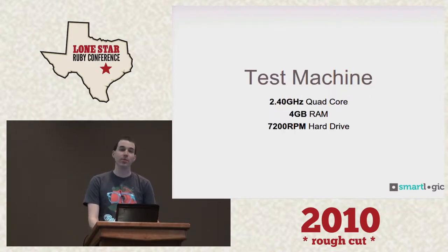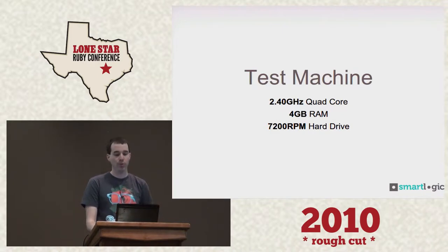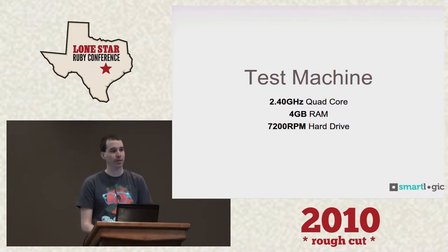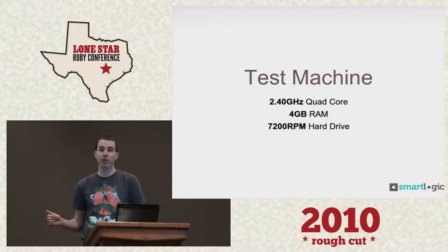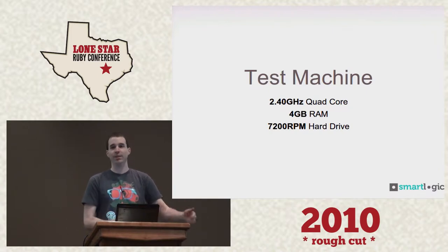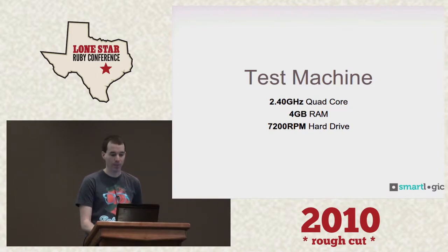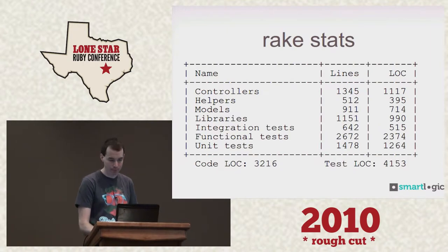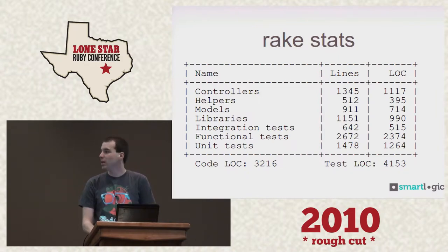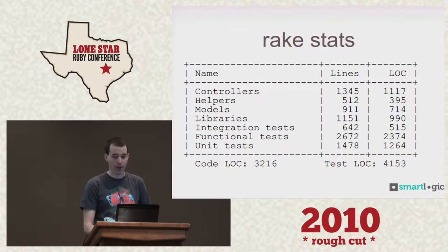I'm going to be showing a lot of benchmarks, so here's what I was running this on: a 2.4 GHz quad-core machine, 4 gigs of RAM, and a standard platter hard disk. I did all these benchmarks in one day on one Git commit by rolling up all the little tips I had, so these are actually pretty solid. It's not a huge project — we did it in about two months — with 4,000 lines of tests and 3,000 lines of code.